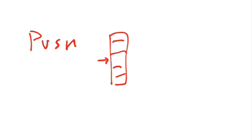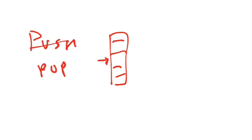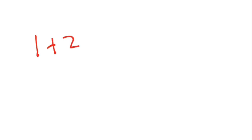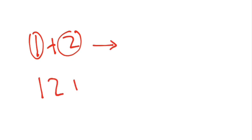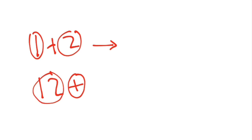In a stack, the operations are push and pop. In push, you insert an element — if the stack pointer is here, you increment it and insert the element. That is push. In pop, if you want to remove the top element, you bring the pointer back down and consider the stack from there — that is pop. Infix means the operator is between both operands. In postfix, the operands come first and the operator is at the last — that is a postfix expression.